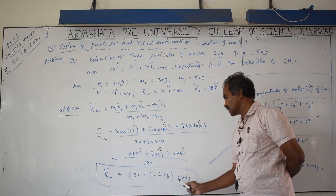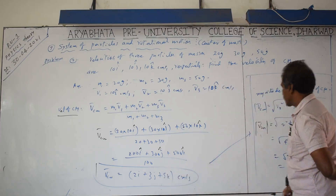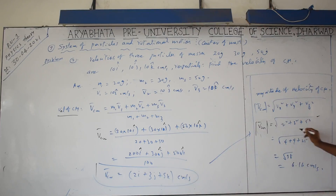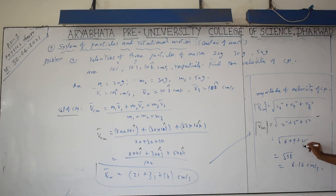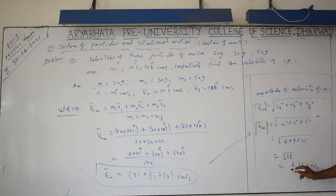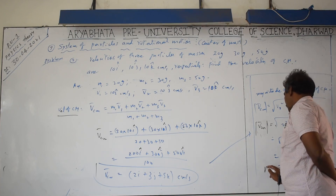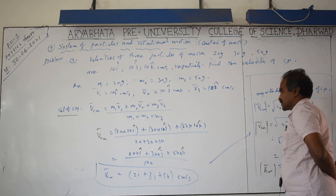The velocity of center of mass in the CGS system: |v_cm| = √(2² + 3² + 5²) = √(4 + 9 + 25) = √38 ≈ 6.16 centimeters per second. This is the magnitude of the velocity of the center of mass.